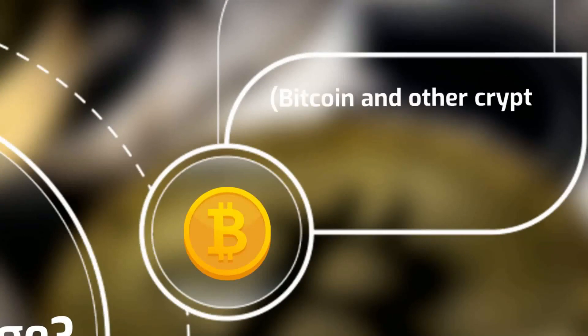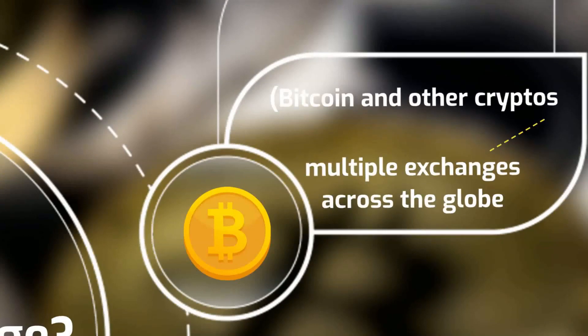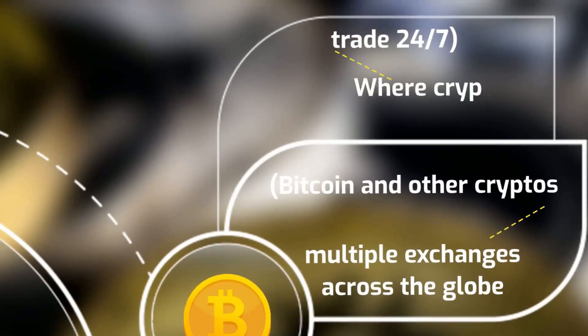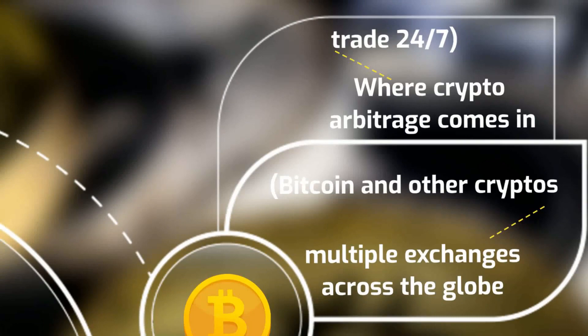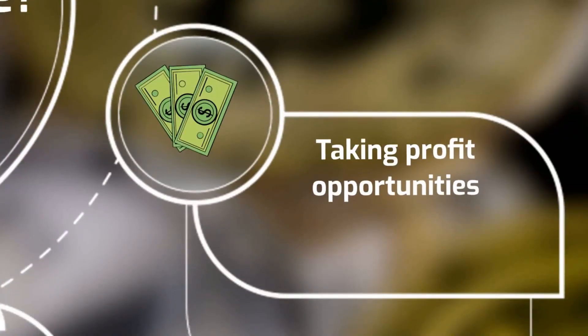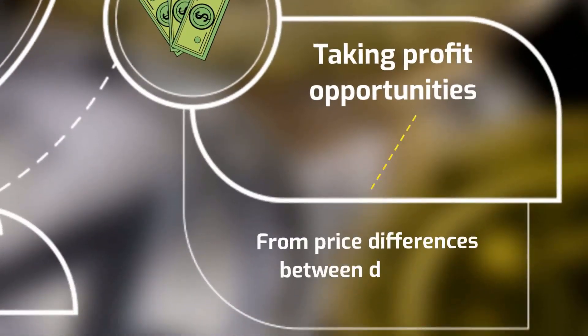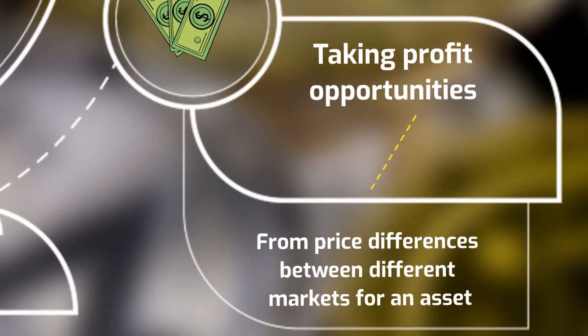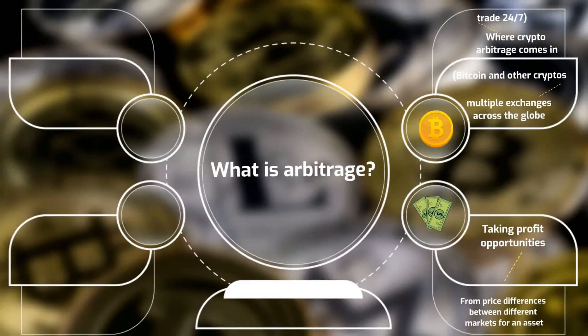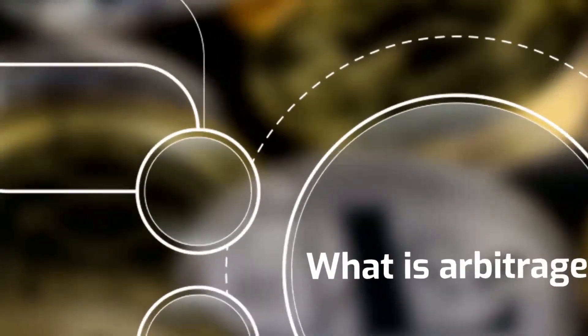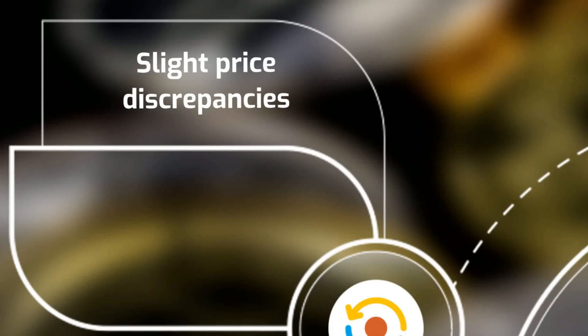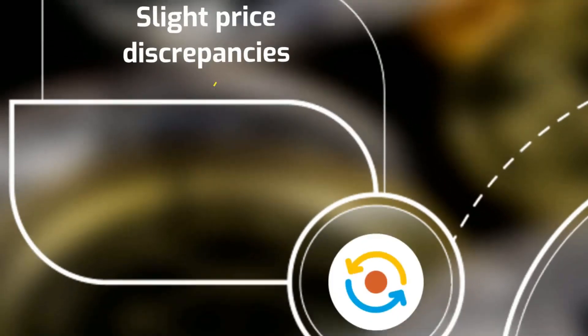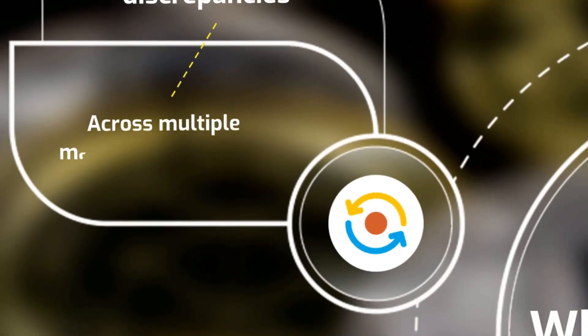Bitcoin and other cryptos are found on multiple exchanges across the globe and available to trade 24x7. This is where crypto arbitrage comes in. Arbitrage means taking profit opportunities arising from price differences between different markets for an asset. Crypto arbitrage trading is a type of trading strategy where investors capitalize on slight price discrepancies of a digital asset across multiple markets or exchanges.